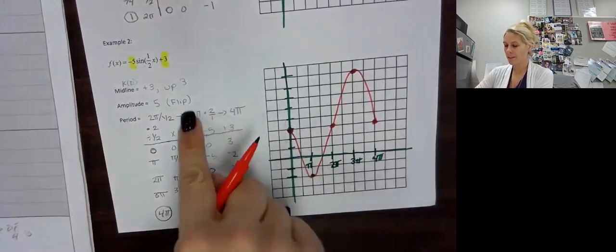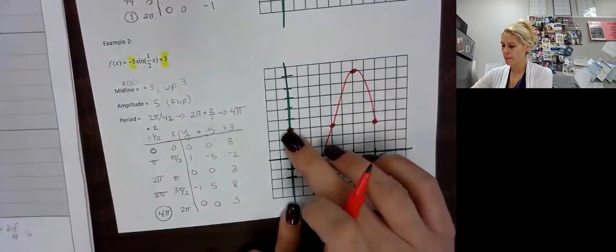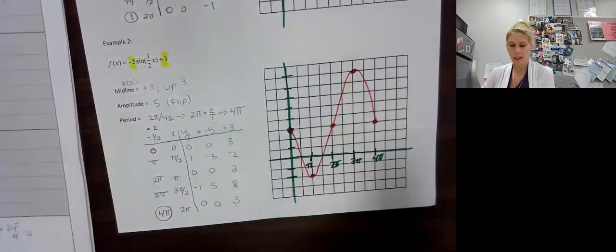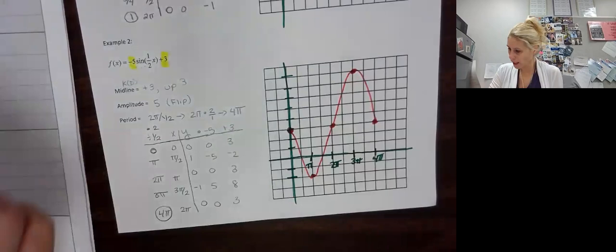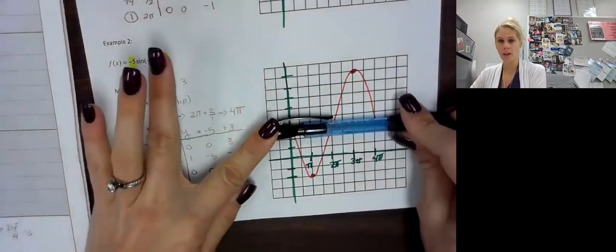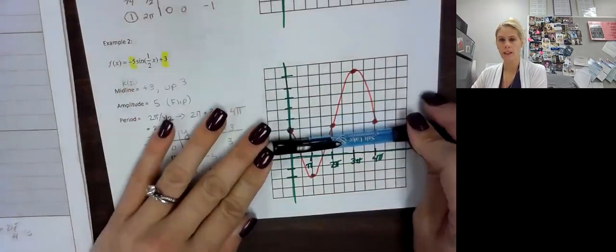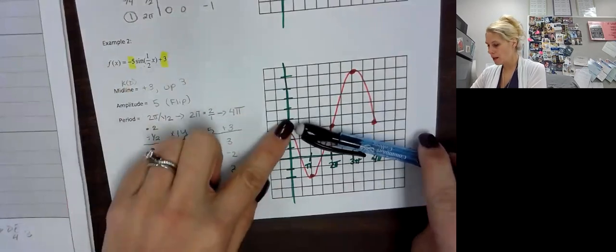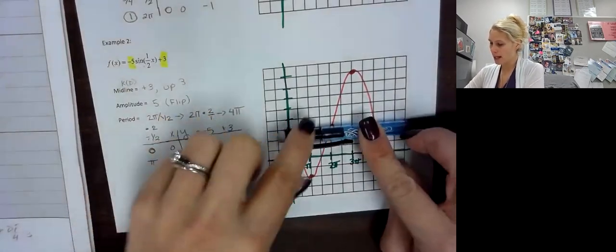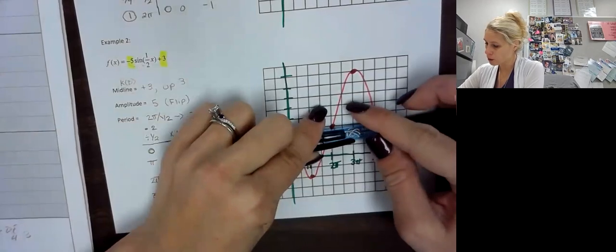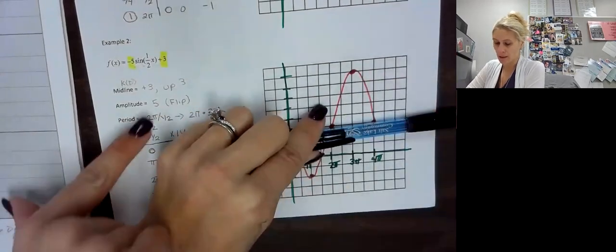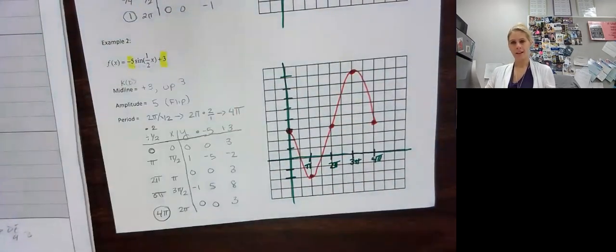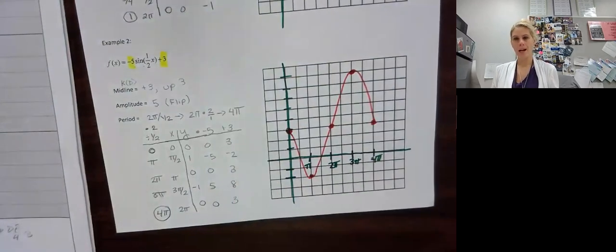First of all, I see a flip — and I did flip it. Remember, the parent function starts up and then goes down, and we did flip it. Let's look at the midline. Halfway is right here — what value on the Y-axis is that? It's 3. That's our shift up 3. From the midline to the max is 1, 2, 3, 4, 5 — amplitude of 5. From the midline to the min is also 5. And our period is 4 pi. We're done.